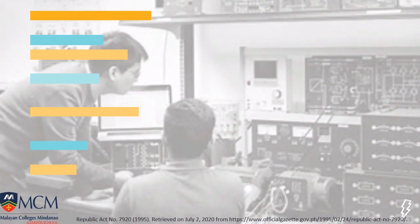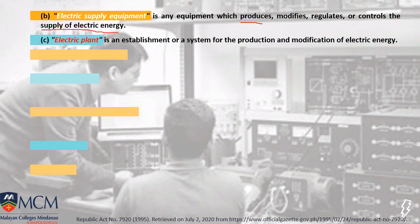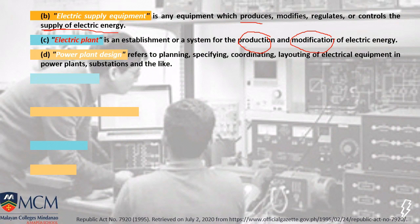We have discussed the seven practices of electrical engineering defined in letter A. In letter B, we have electrical supply equipment — equipment which produces, modifies, regulates, or controls the supply of electric energy. Examples are generators and transformers. Letter C is electric plant — the keyword is production and modification. Letter D is power plant design — the keywords are planning, coordinating, and layout. The keyword for supply equipment is supply.